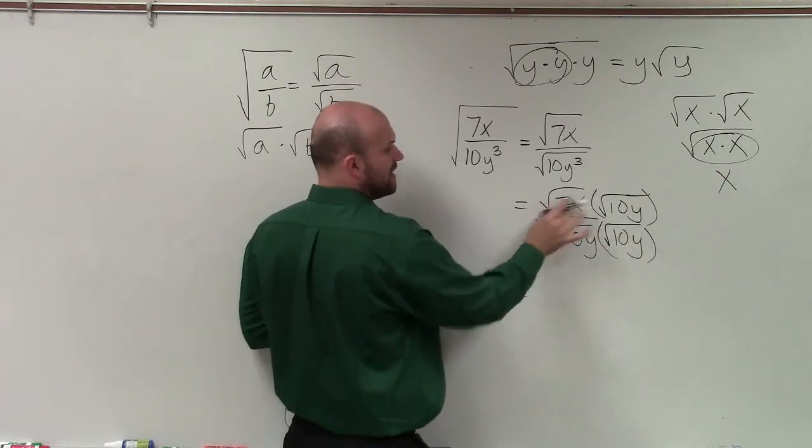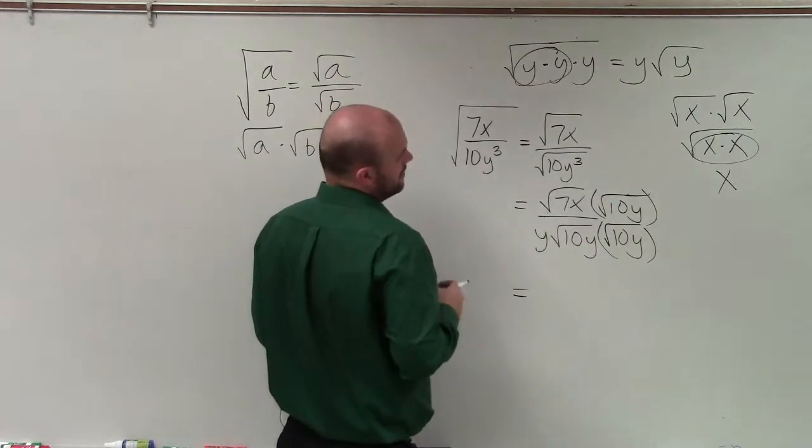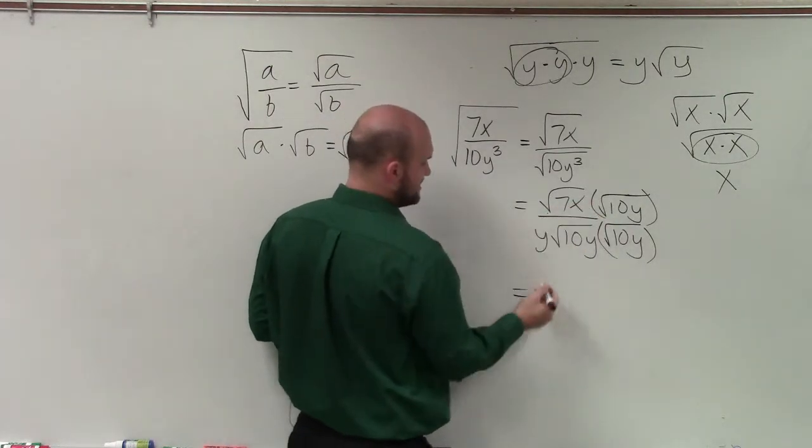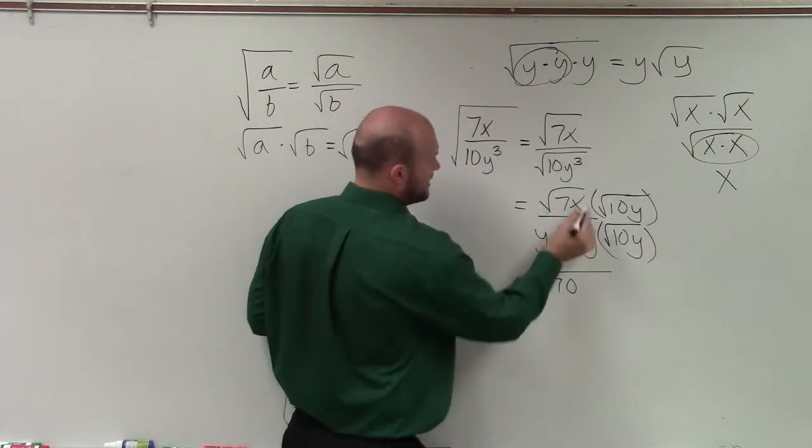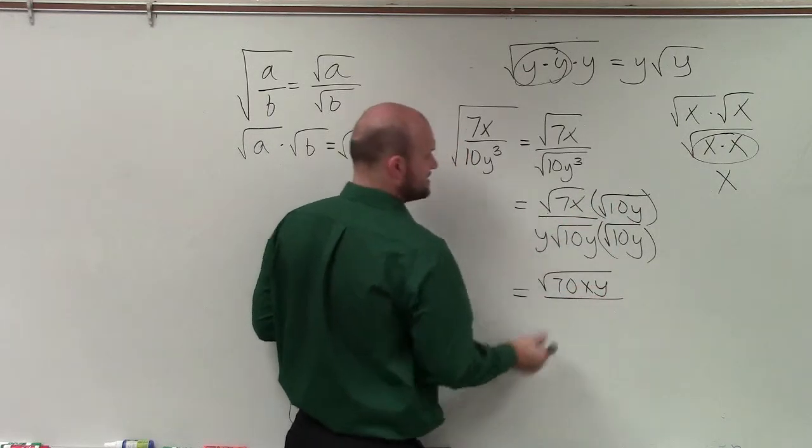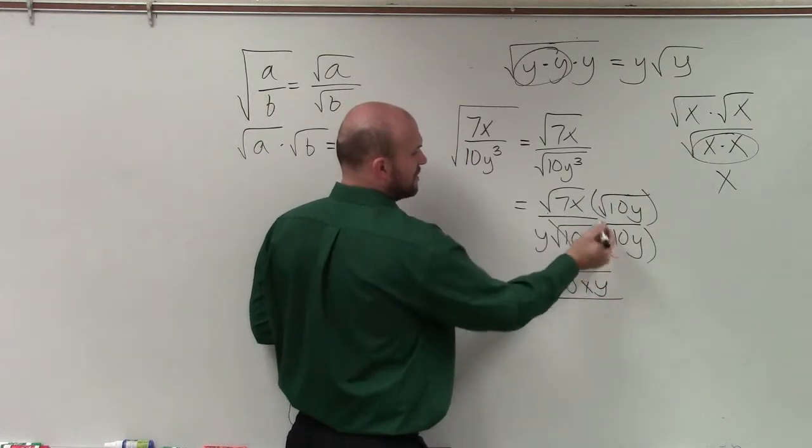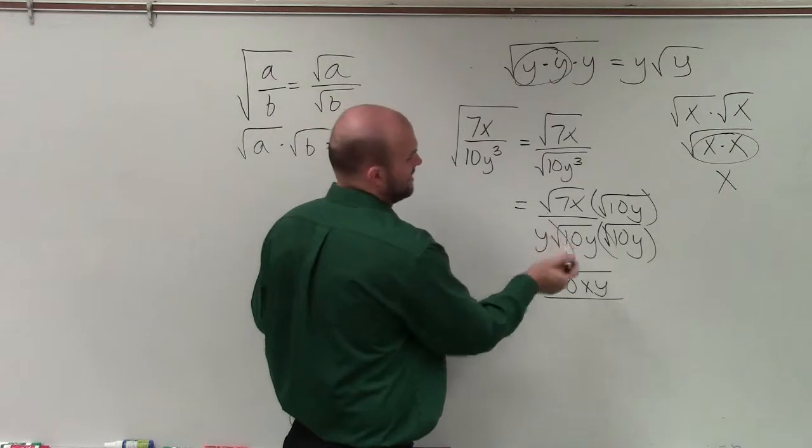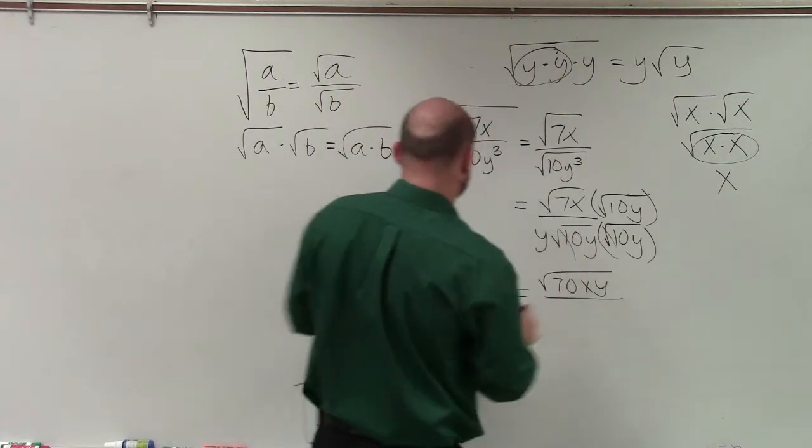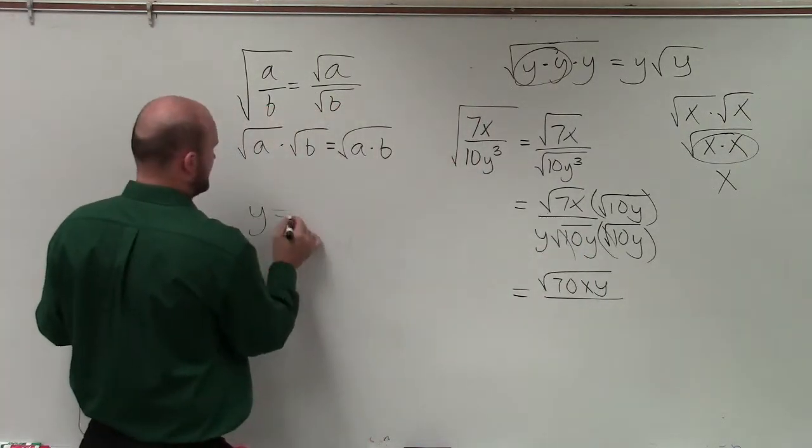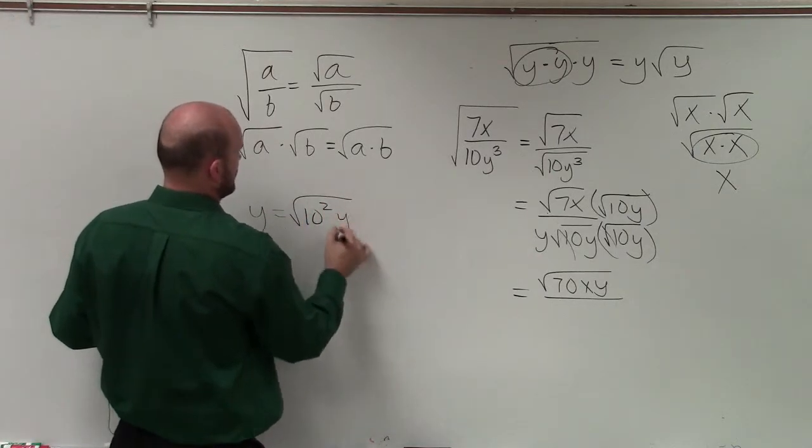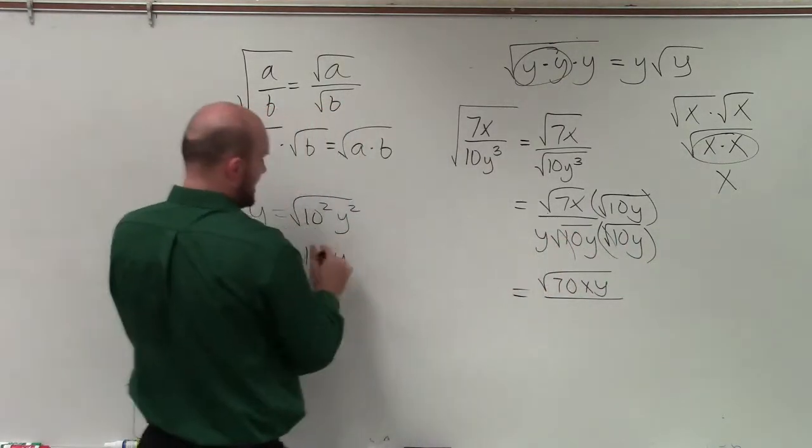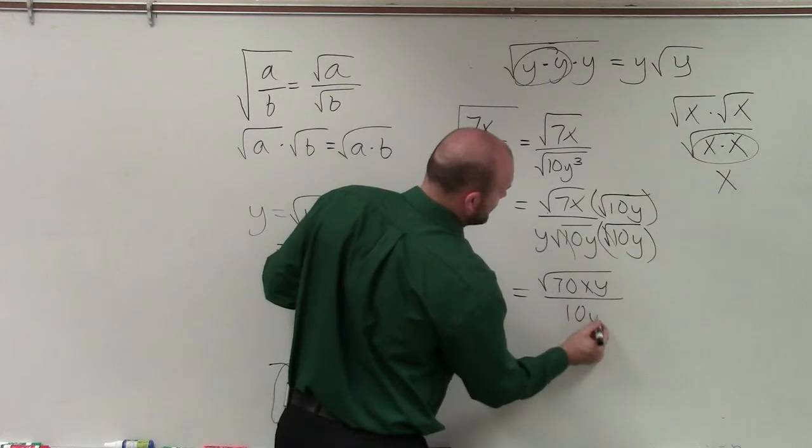Then over here, I can multiply my two terms under each radical. So therefore, I have 7 times 10, which is going to be 70. x times y is just going to be xy. And then my denominator, my two square roots are going to cancel out. And I'm just left with, so what this becomes is y equals the square root of 10 squared y squared, which is just equal to 10y. So therefore, 10y times y is going to be 10y squared.